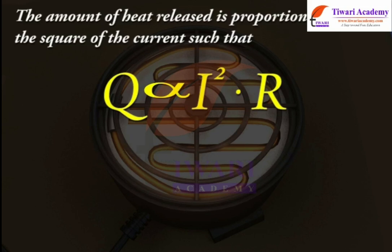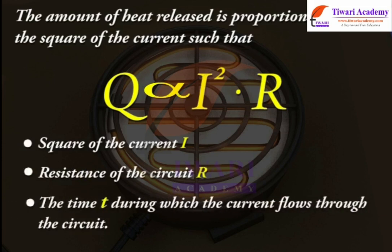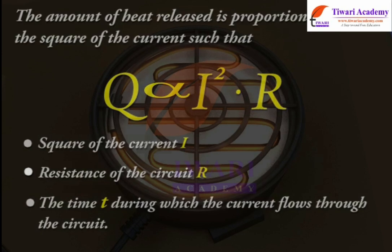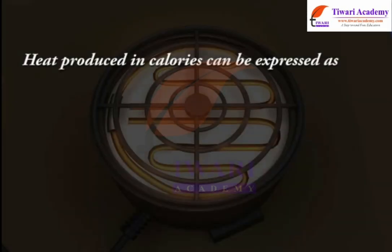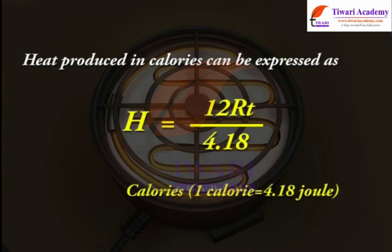Joule's first law states that the heat produced is proportional to the square of the current I, the resistance of the circuit R, and the time t during which the current flows through the circuit. Heat produced in calories can be expressed as H = I²RT / 4.18 calories. One calorie is equal to 4.18 joules.